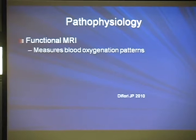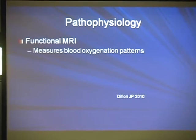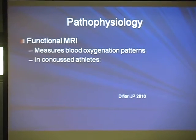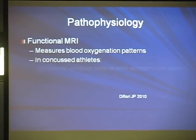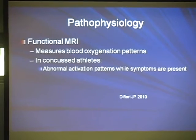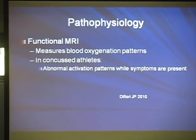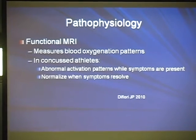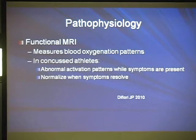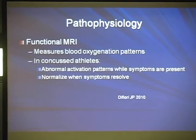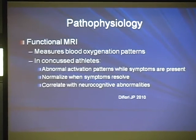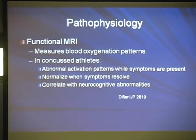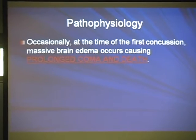Functional MRI looks at blood oxygenation patterns within the brain. Studies of concussed athletes found functional MRI abnormalities when symptoms are present, with gradual normalization over time, correlating well with other measurable abnormalities.